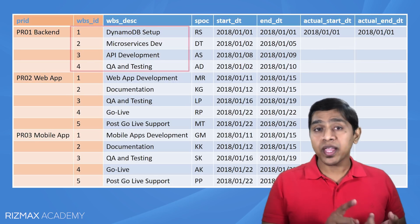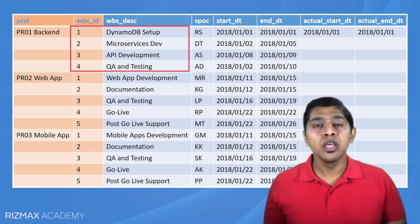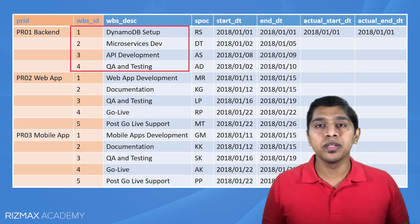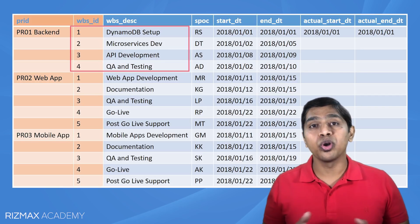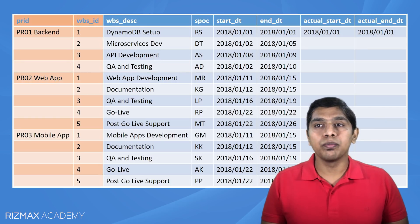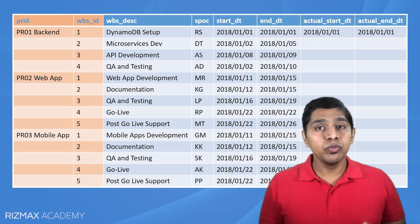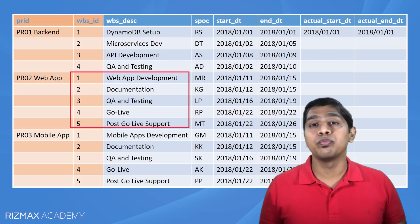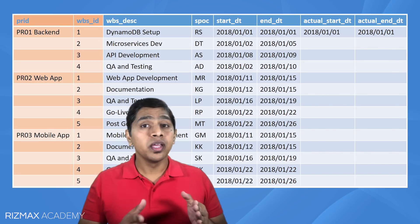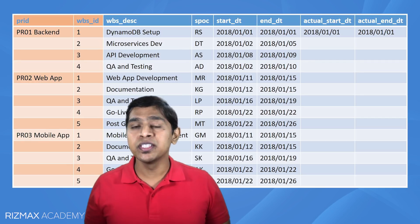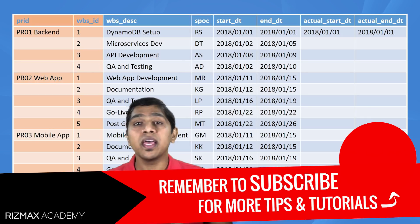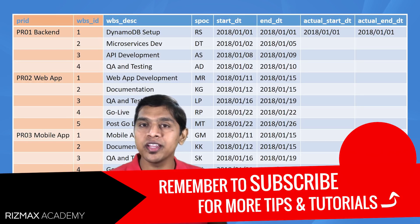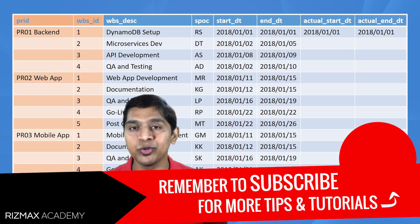WBS is a work breakdown structure — you can think of this as an activity within a project. For example, the back-end development project will have activities like DynamoDB setup, microservices development, API development, and quality testing. Similarly, web application development will have WBS elements like web app development, documentation, QA, testing, go-live, and post-go-live support. Each of these activities will have a SPOC — a single point of contact — as well as a start and end date. In the next lesson, we'll create this table using the AWS DynamoDB console.